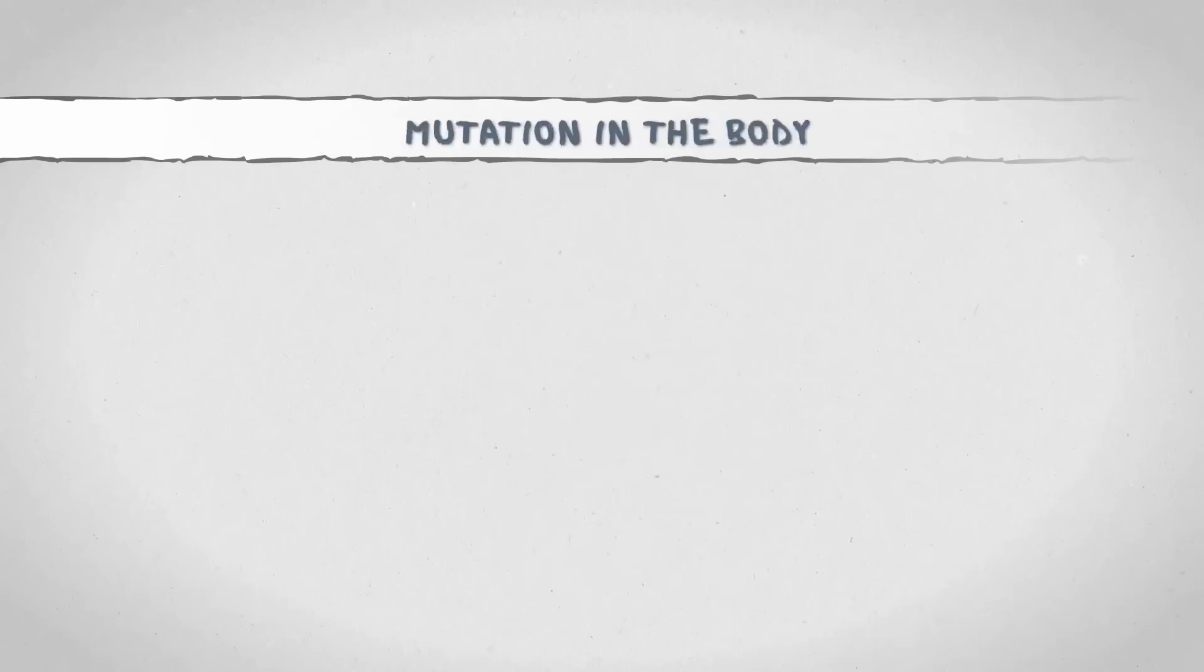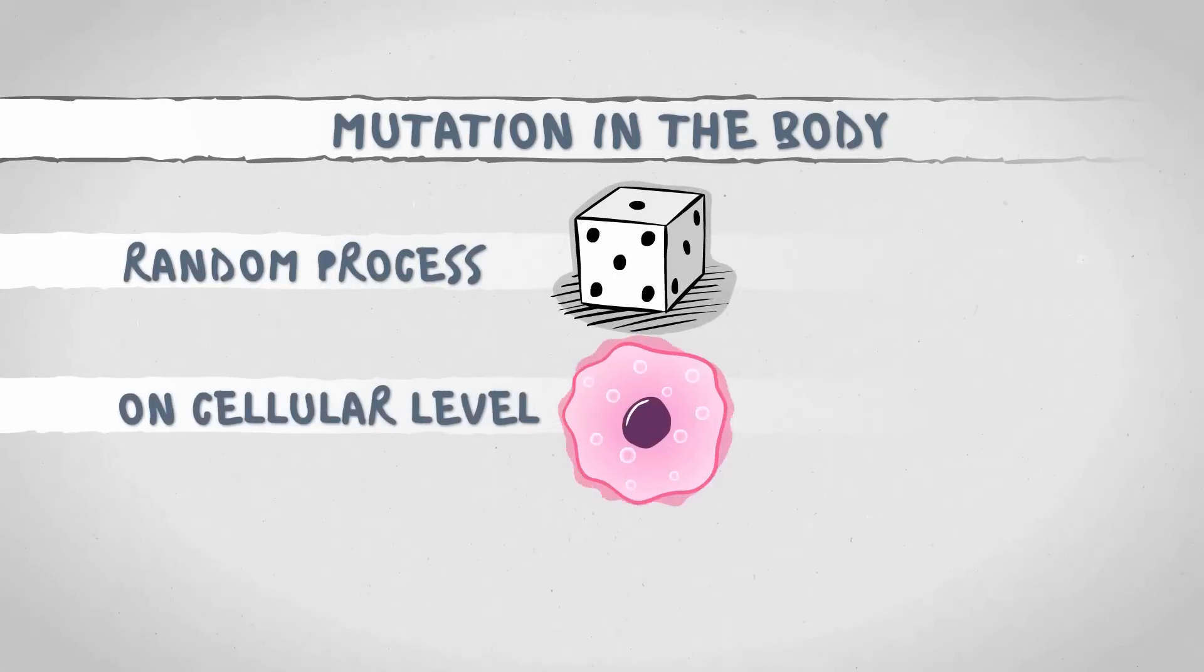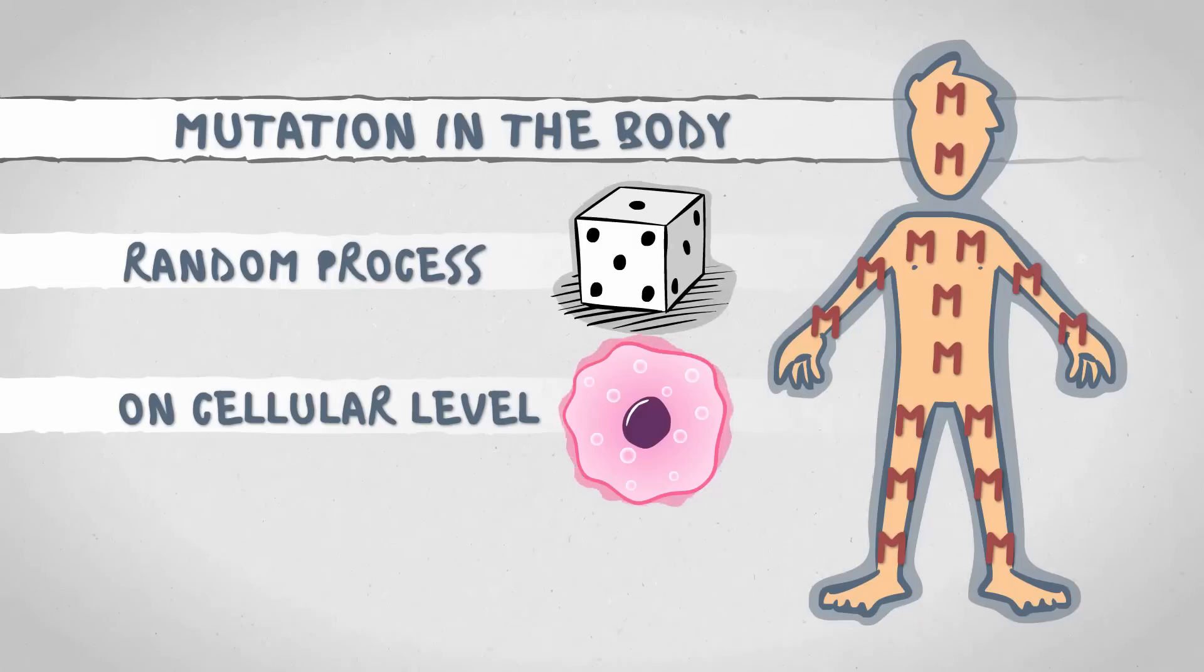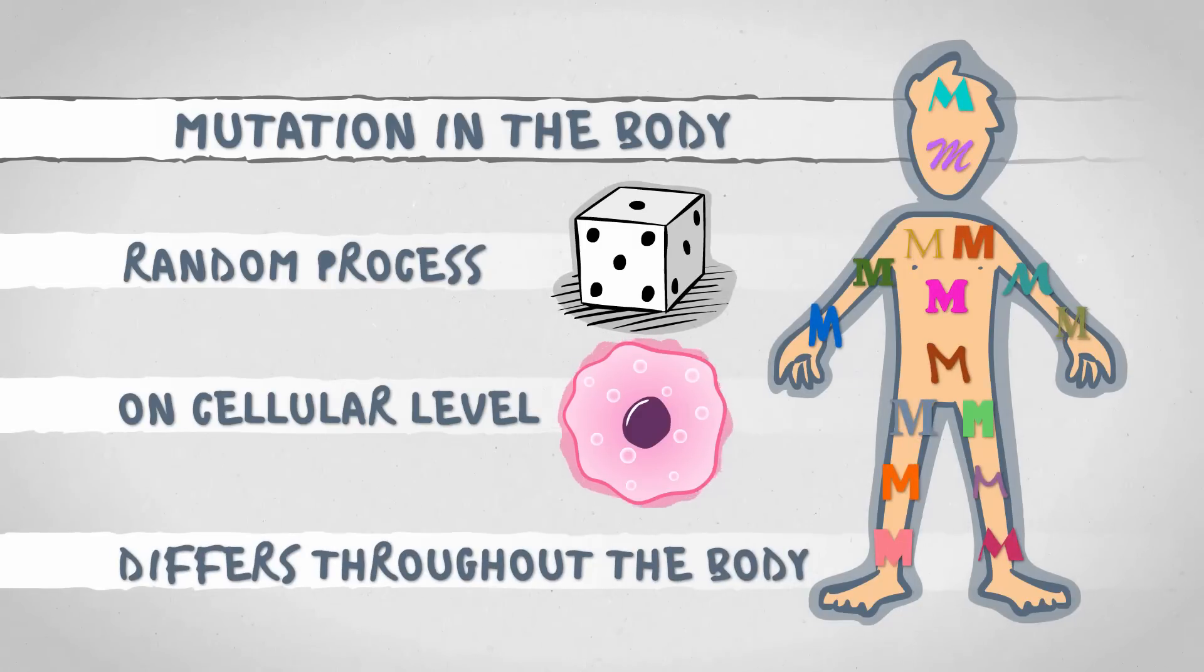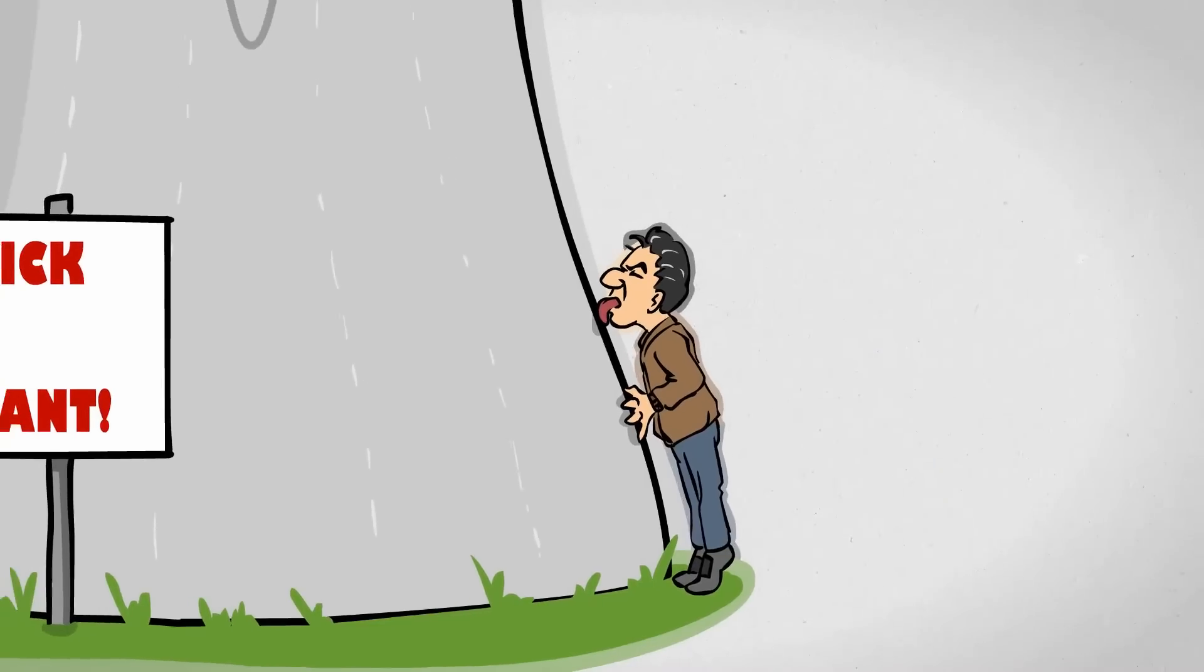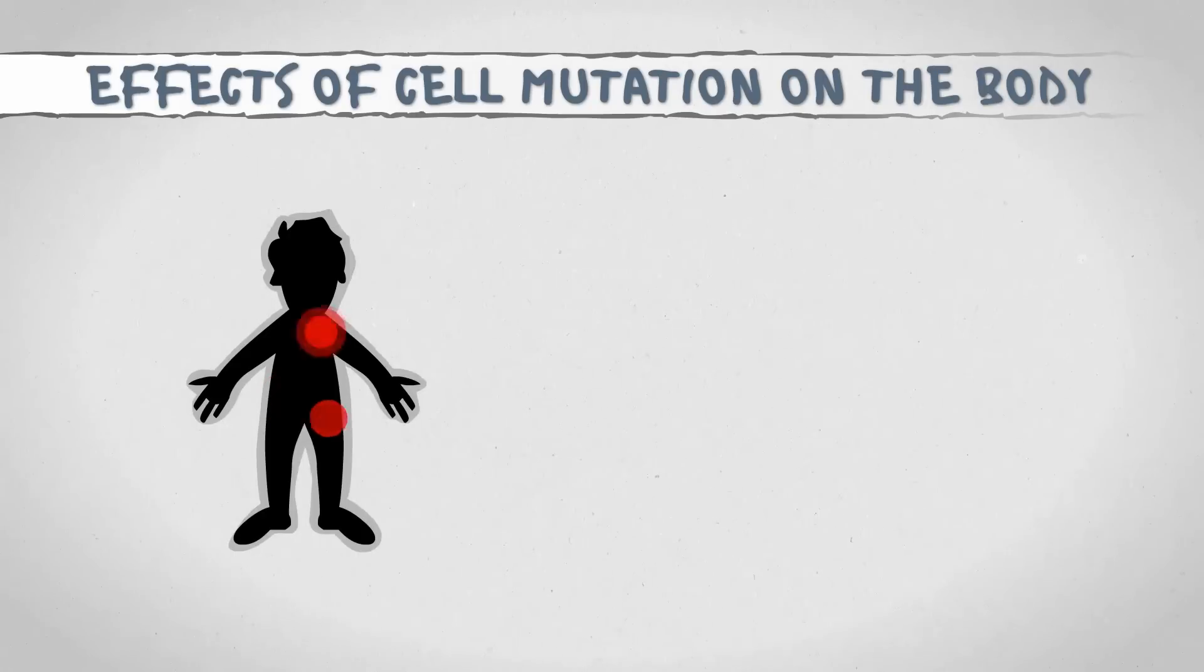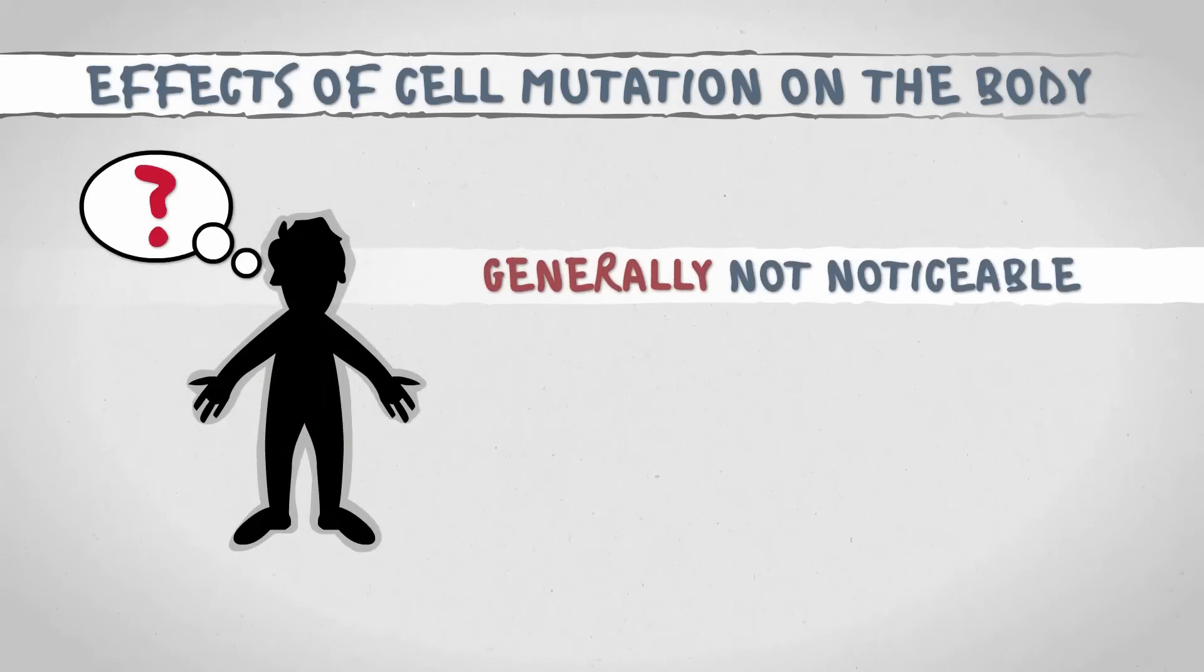Mutation happens randomly on a cellular level. The chances of the billions of cells in your body mutating at the same time, in the same DNA section, in the same way, is zero. So you can stop strategically licking nuclear plants.